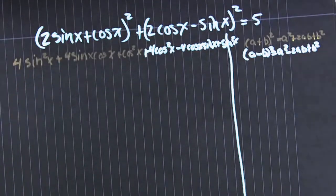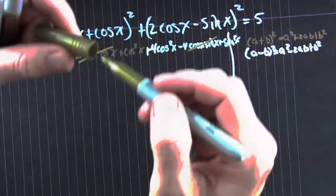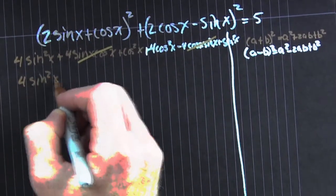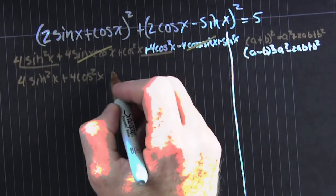Now, we need to gather, collect, and combine. We see we have additive inverses. Those go away. Now, let's rewrite what we have so we can see what we're doing. That's 4 sine squared plus 4 cosine squared. Nice.